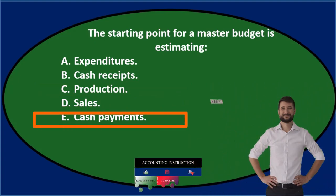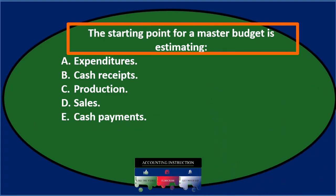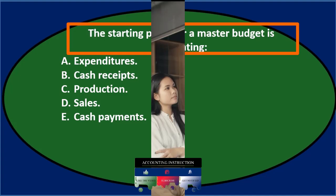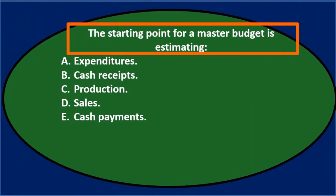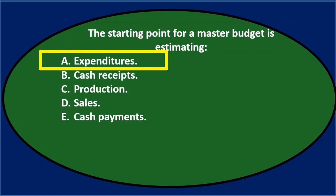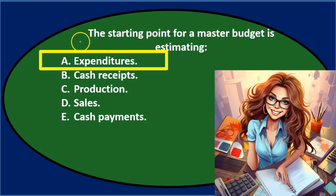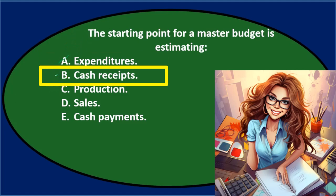Let's go through this again using the process of elimination. The starting point for a master budget is estimating — we've got to visualize what the process is going to be. We've got the master budget, and we've got to go through all the budgets in order. We can't jump in the middle. It's got to go from a beginning point to an ending point, otherwise it'll be a mess. A — start with expenditures? Typically not, because you'd think we start somewhere like the top of an income statement, which starts with revenue, the sales type. We've got to start with the top line, not the middle. So not expenditures. Cash receipts — that seems like it could be a good place to start since that's at least money coming in.